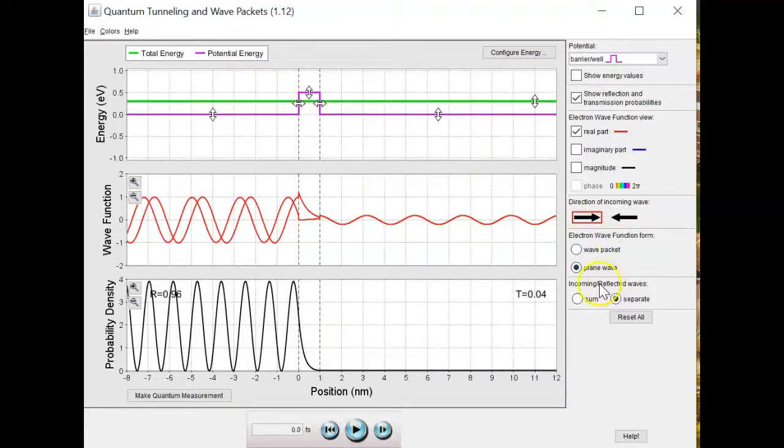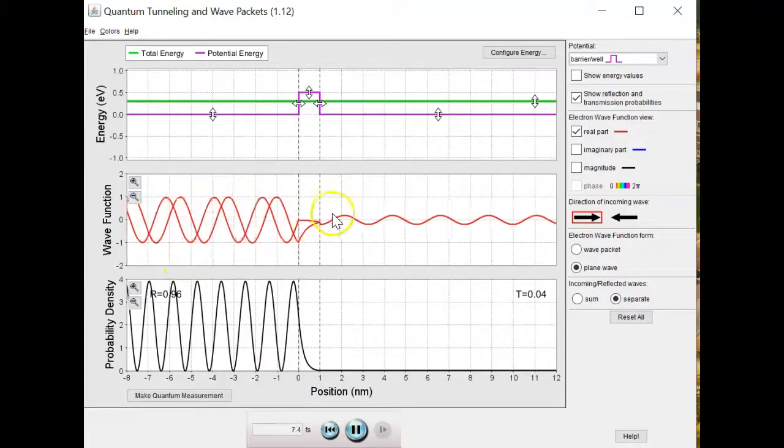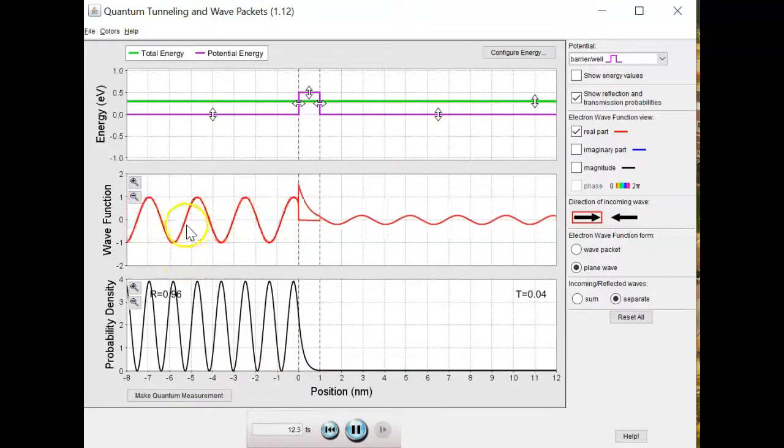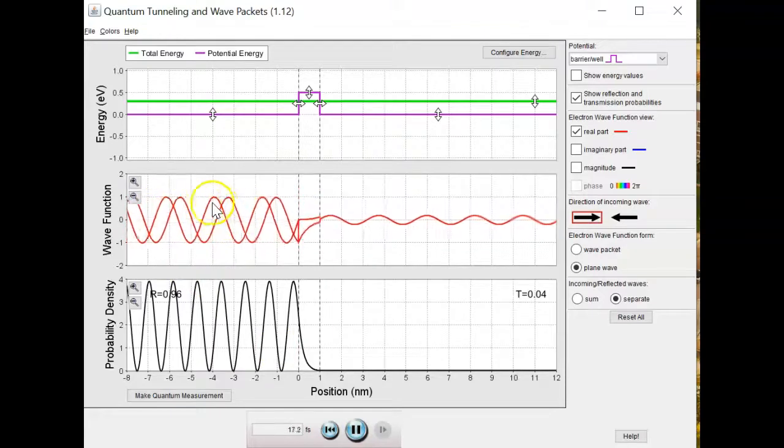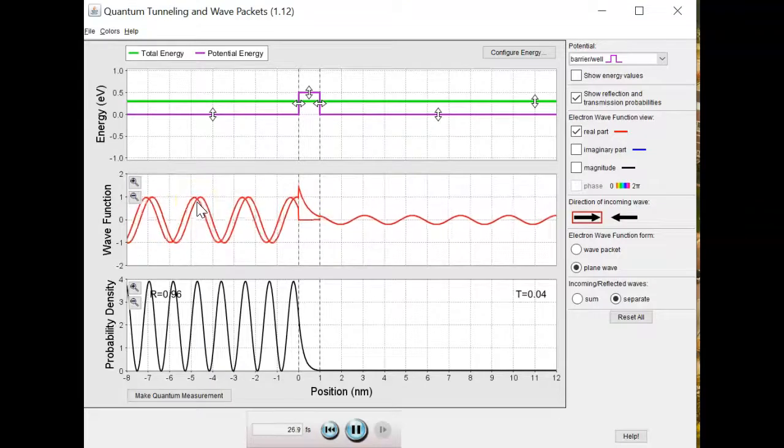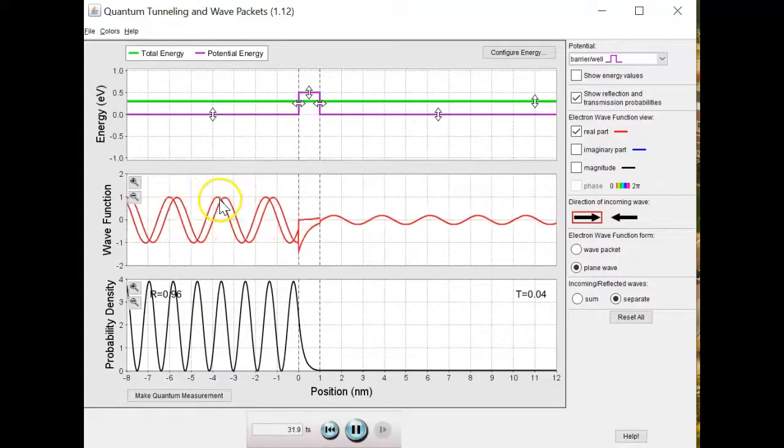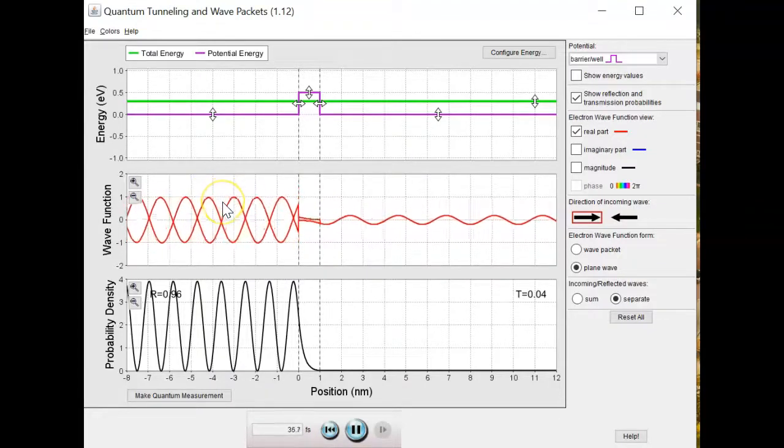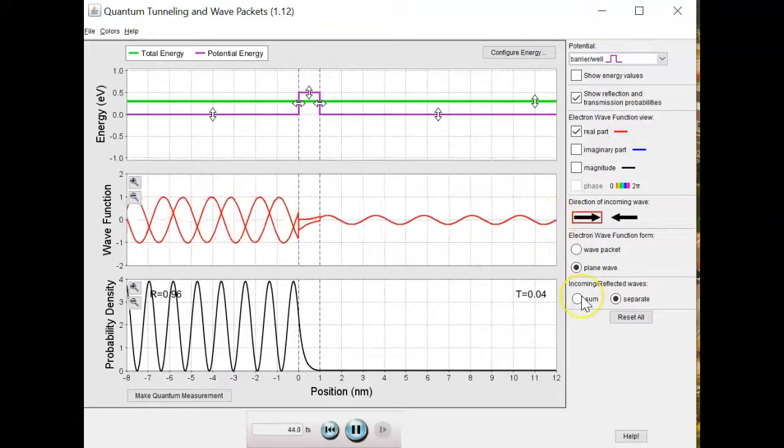So now we are looking at the same thing. We haven't changed the energy. We've just gone into the incoming and reflected waves are now shown separately. So the first question is, what do the two parts of the wave function in the leftmost region represent? If we let this play, we can see that one is moving to the right and one is moving to the left. So this is our incident wave moving to the right. Our reflected wave is moving to the left. And since they are almost equal in amplitude, that's part of why it looks like we see a standing wave when we look at the sum.